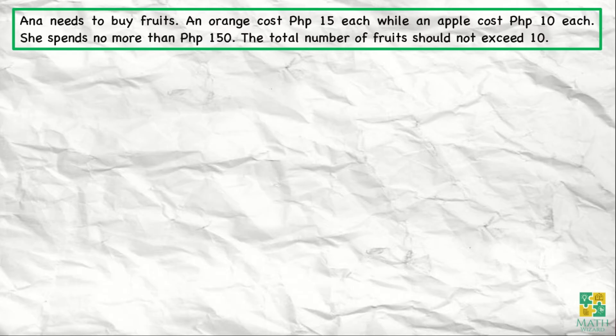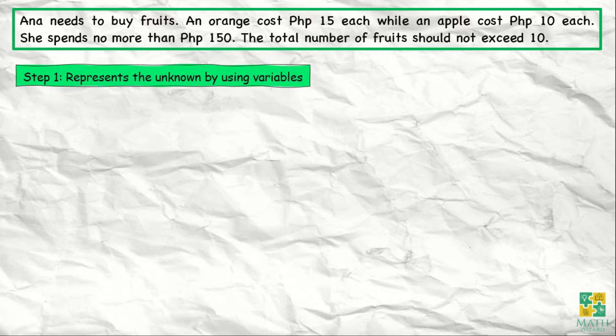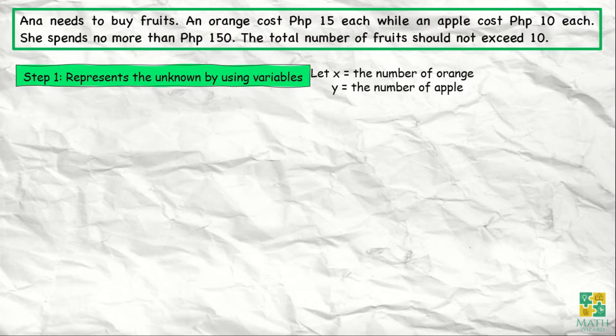The first step is we need to represent the unknown by using variables. So we let x be the number of oranges and y be the number of apples.